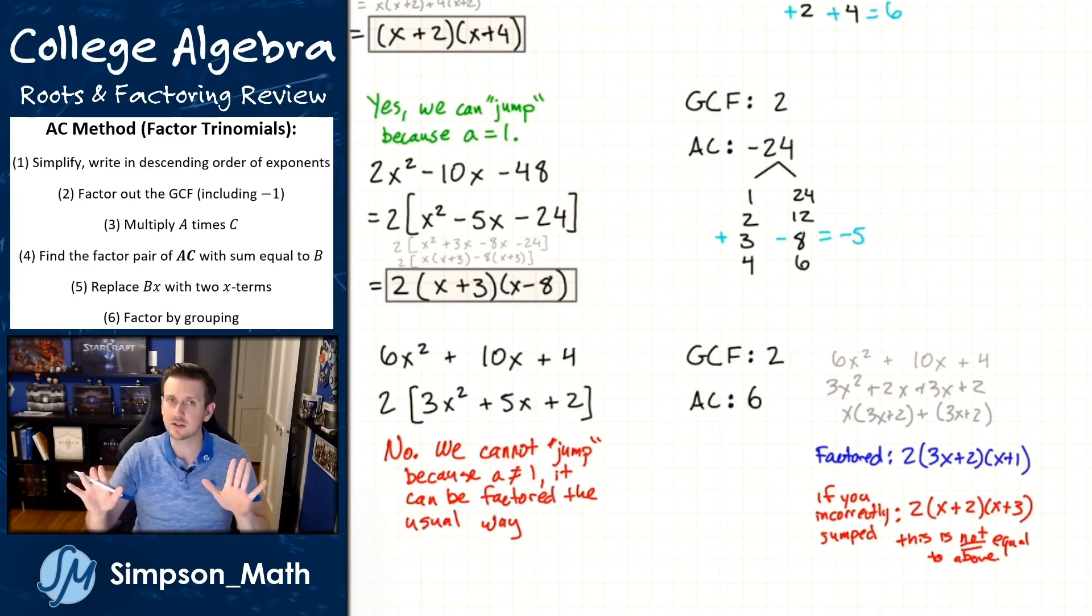So hopefully you're seeing that this is just an easier version of AC method when A is one. If you don't want to just jump, keep doing it. But hopefully you'll see at some point that that will save you some time. But if A is not one, you just got to do it the regular way, but you've already mastered that.